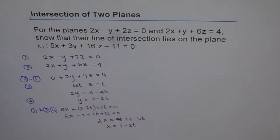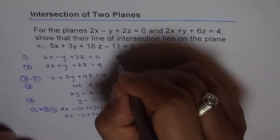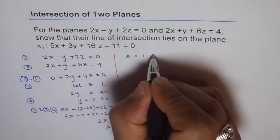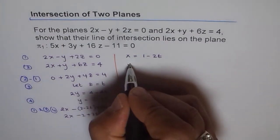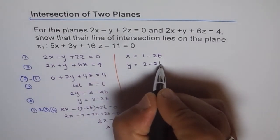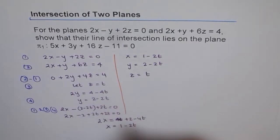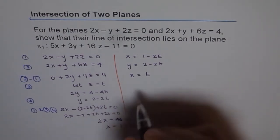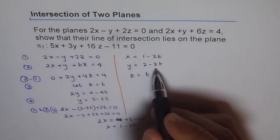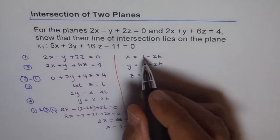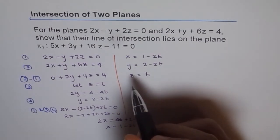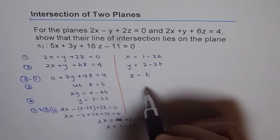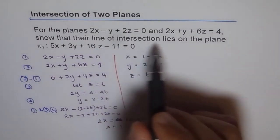Let me write down my solution clearly. I have x equals to 1 minus 2t, y equals to 2 minus 2t, and z equals to t. That gives me the equation of the line in parametric form, where we have a point and a direction vector. We have to show that this line of intersection lies on the plane pi 1.